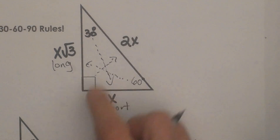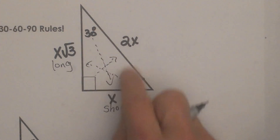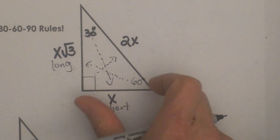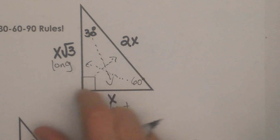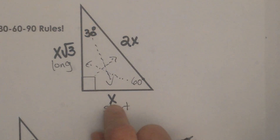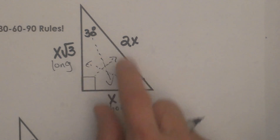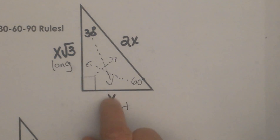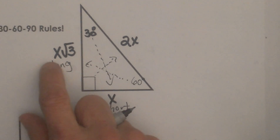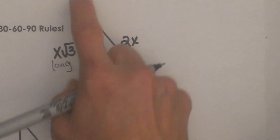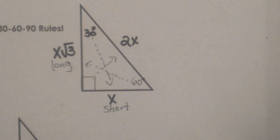The rules are very simple. The very important side you need is the short side. If you have the short side, just double it to get the hypotenuse. Or if you have the short leg, you can multiply that short leg times the square root of 3 to get the long leg.